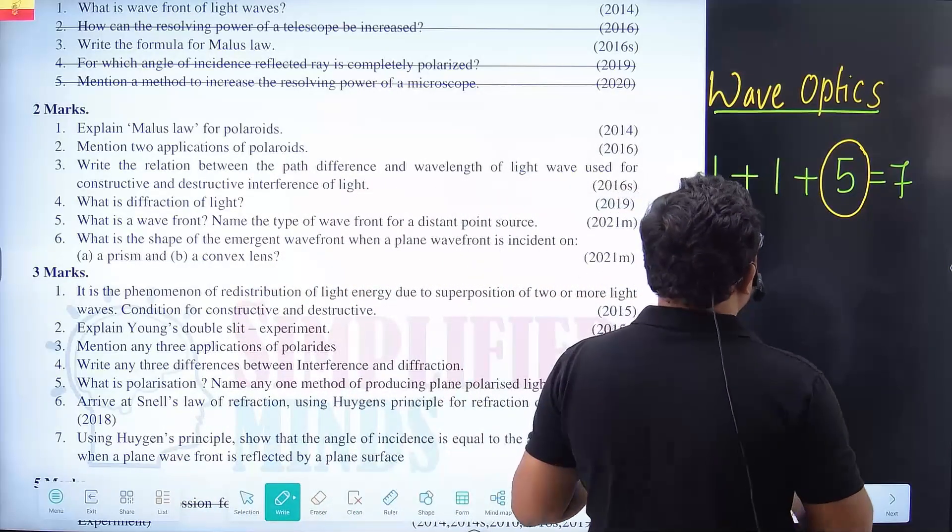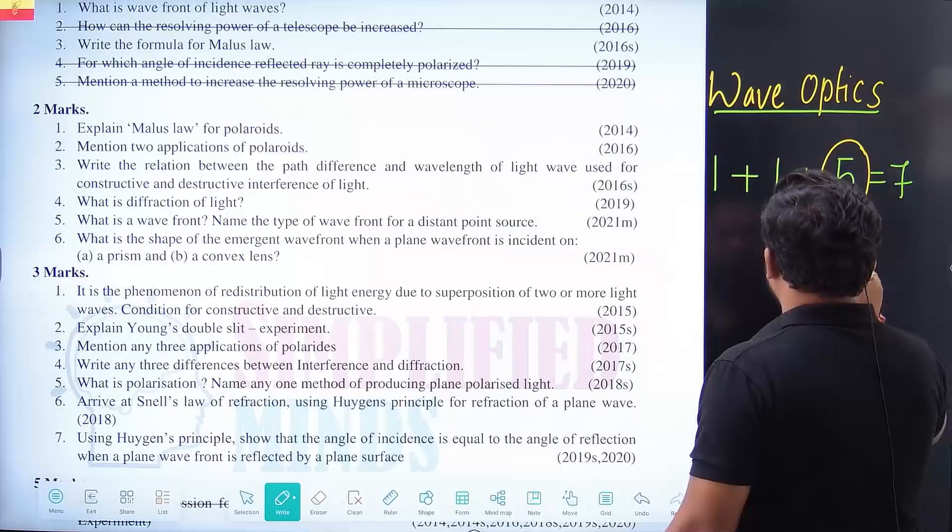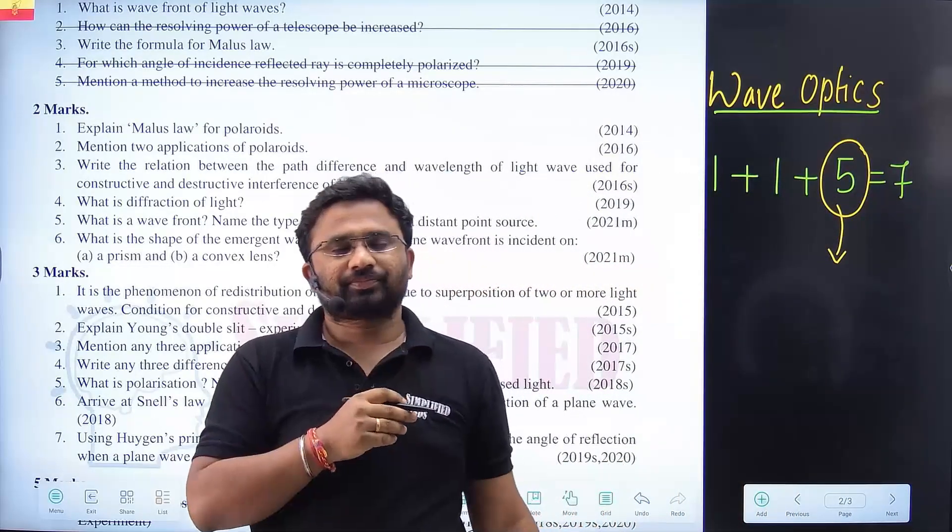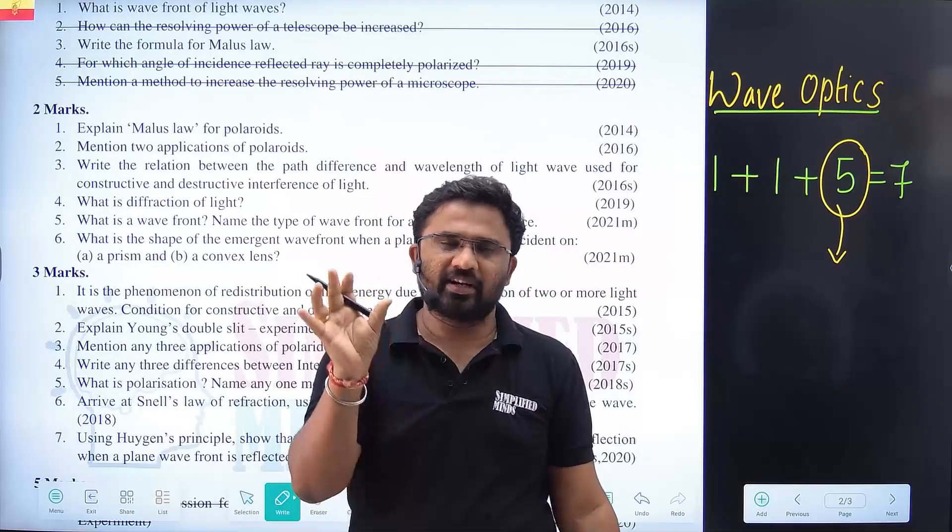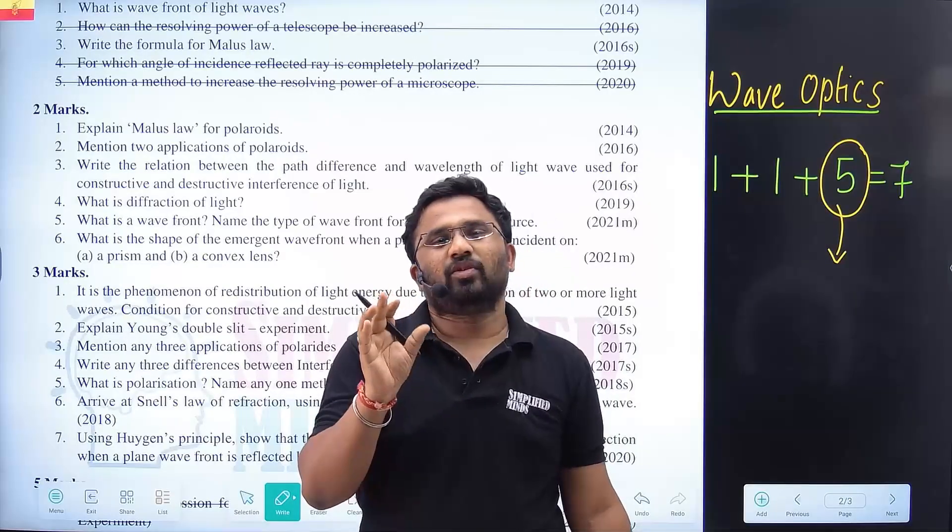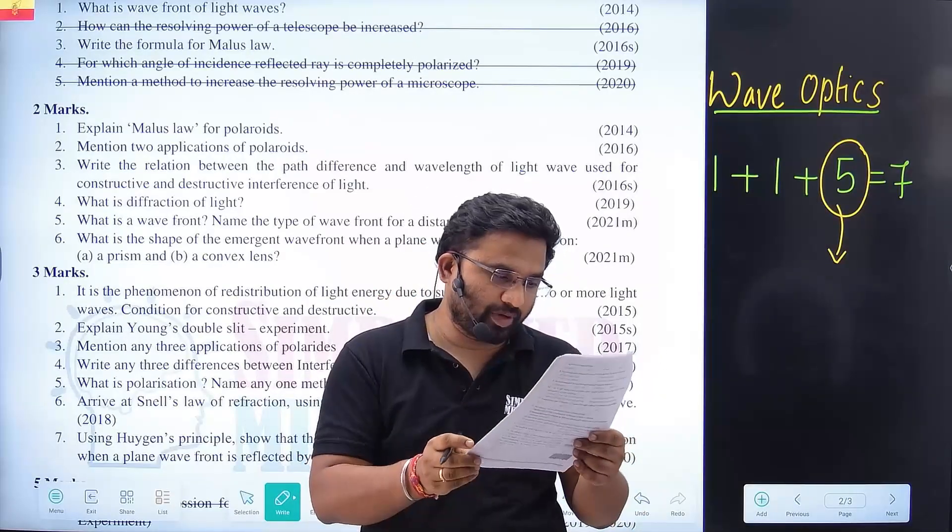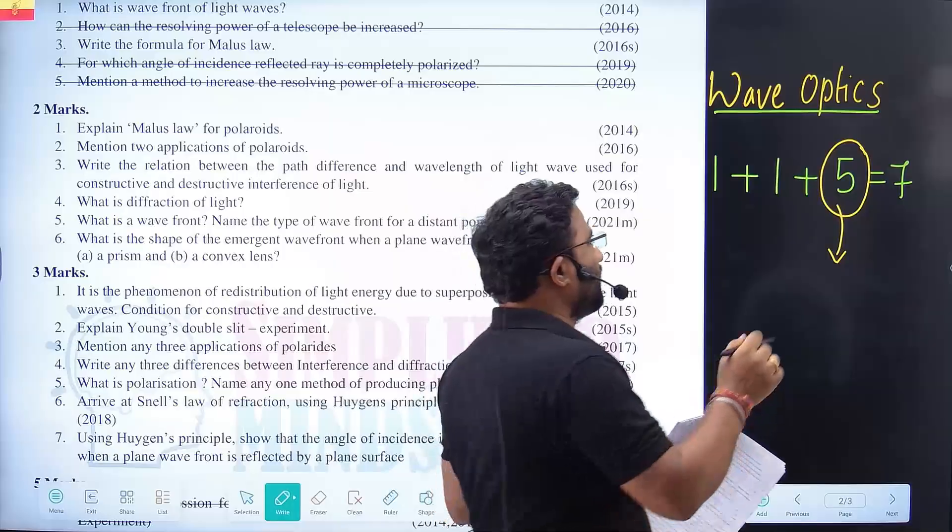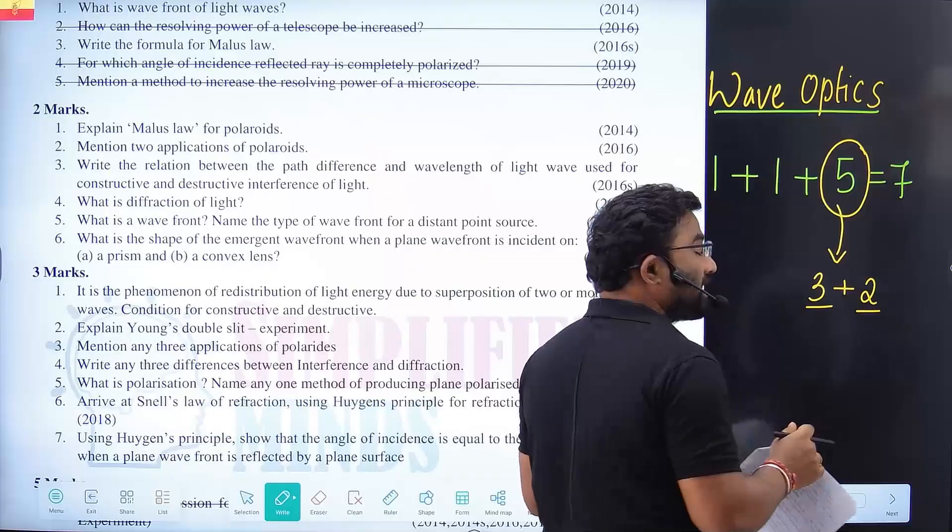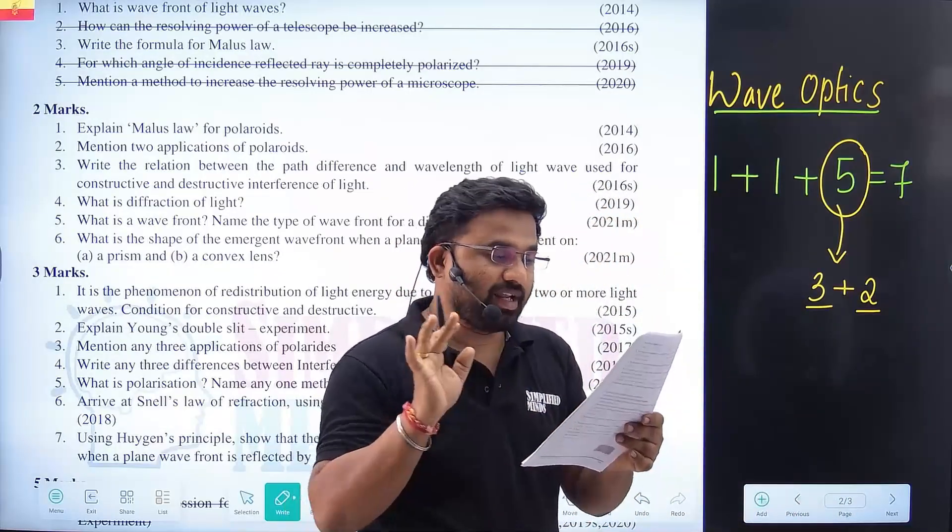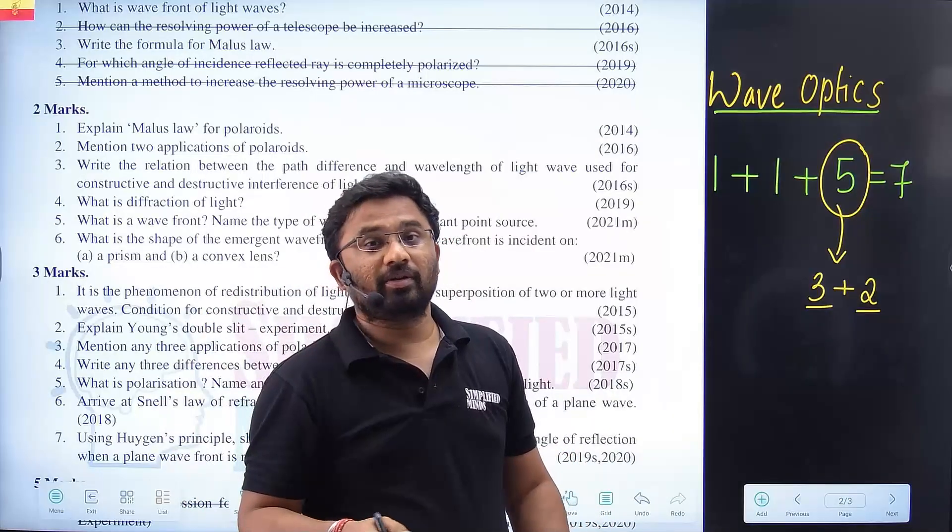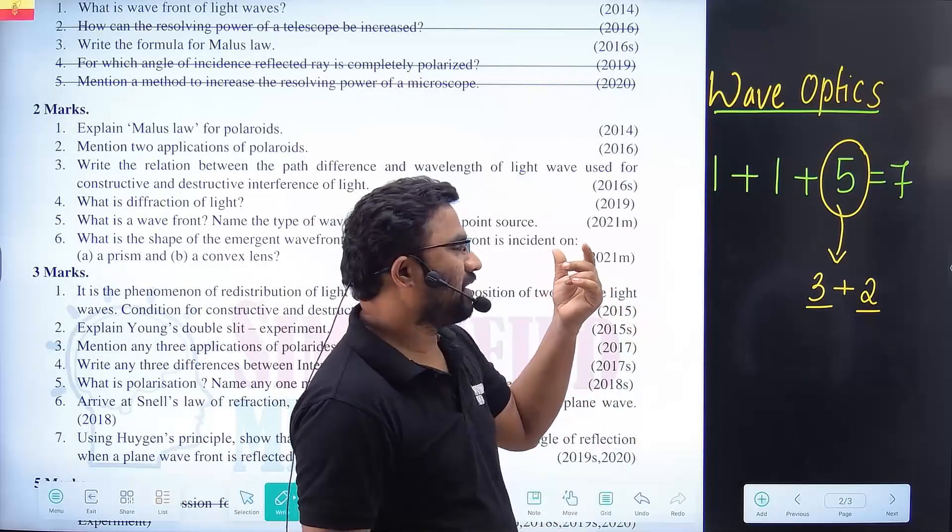5 marks, usually numerical. But this is the first time most of the time they ask Huygens principle. Huygens principle statements on the basis of refraction or reflection. Either basis question has chances. Even the model paper split the question. 5 marks, 3 plus 2 split mark. 3 marks one question, 2 marks one question. They can even split like 3 plus 2. You can also make 3 plus 1 plus 1.